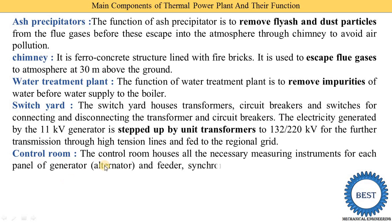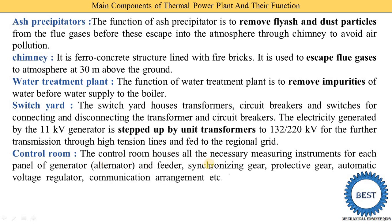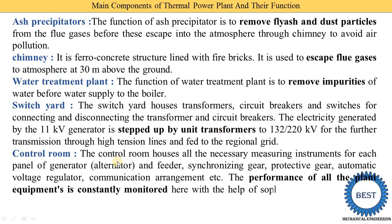The last component is the control room. The control room houses all the necessary measuring instruments for each panel of generators, including feeders, synchronizing gear, protective gear, automatic voltage regulators, and communication arrangements. The performance of all plant equipment is continuously monitored here with the help of sophisticated instrumentation and controls from one central place.